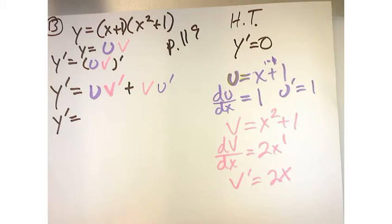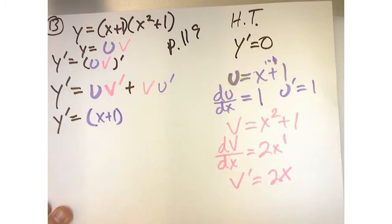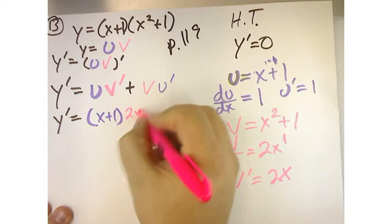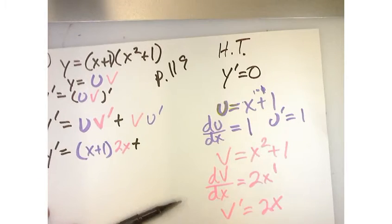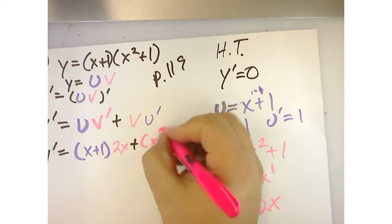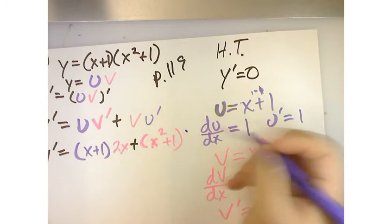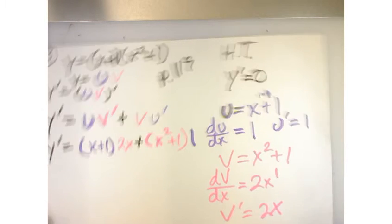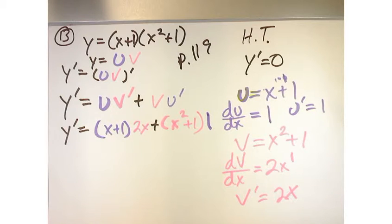So now let's plug this stuff in. So u is x plus one, v prime is just 2x plus v, which is x squared plus one, and then du, or u prime, which is just one. So now, before I go any further, do you guys see what I'm doing here? Are there any questions? I don't want to go too fast.